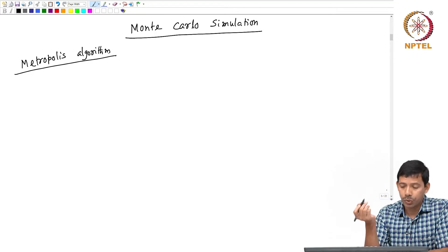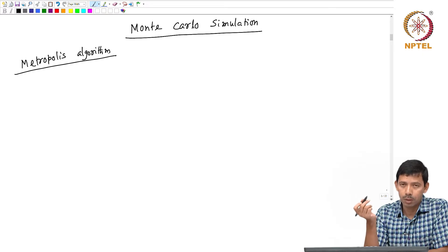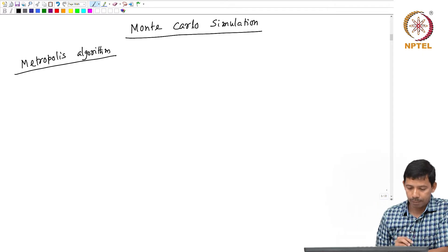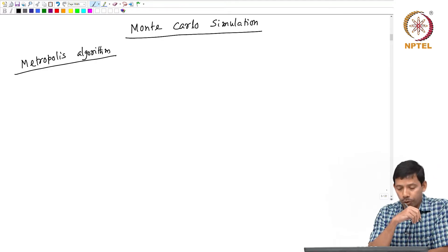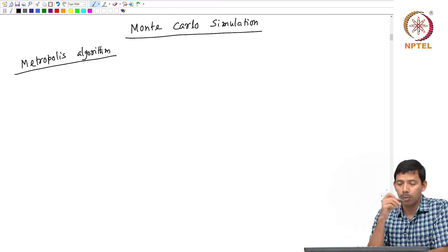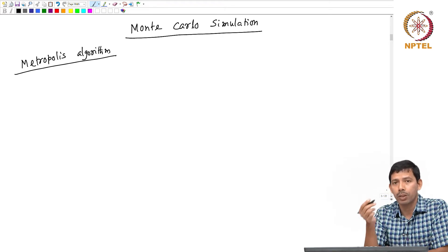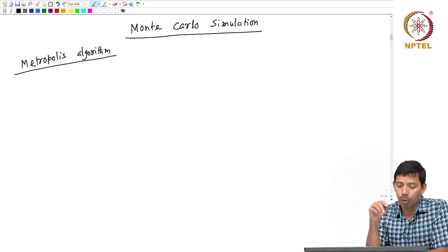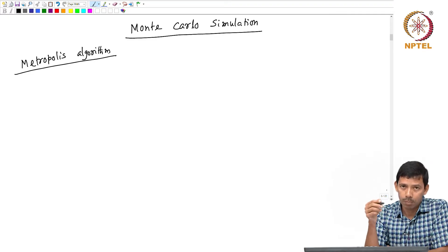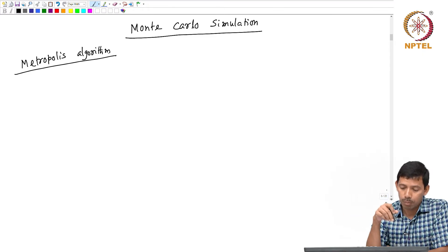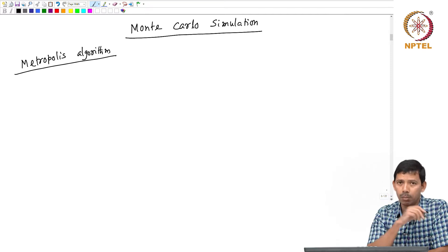We are now trying to generate new conformations of my system of interest by Monte Carlo simulation technique. The new conformations of the system are generated by using a random number generator. That is the big difference of Monte Carlo with molecular dynamics. In molecular dynamics simulations, we generated new conformations by solving Newton's equation of motion — Newton's second law. Whereas in Monte Carlo simulation, we generate the new conformation using a random number generator.